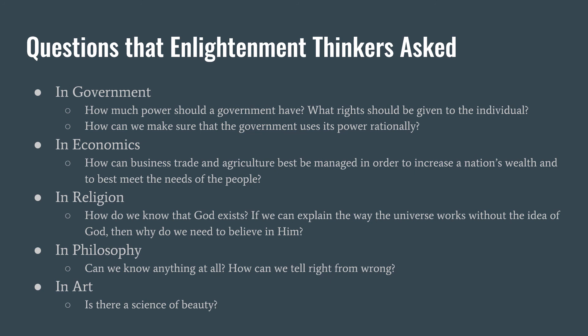Enlightenment thinkers were even reconsidering art. They were trying to discover if there was a science to beauty — some sort of mathematical or rational basis that defined perfect form and perfect beauty. Basically, in all of these different fields — economics, religion, philosophy, and art — Enlightenment thinkers were attempting to apply reason and scientific thought to fix old problems they had inherited from previous ages.